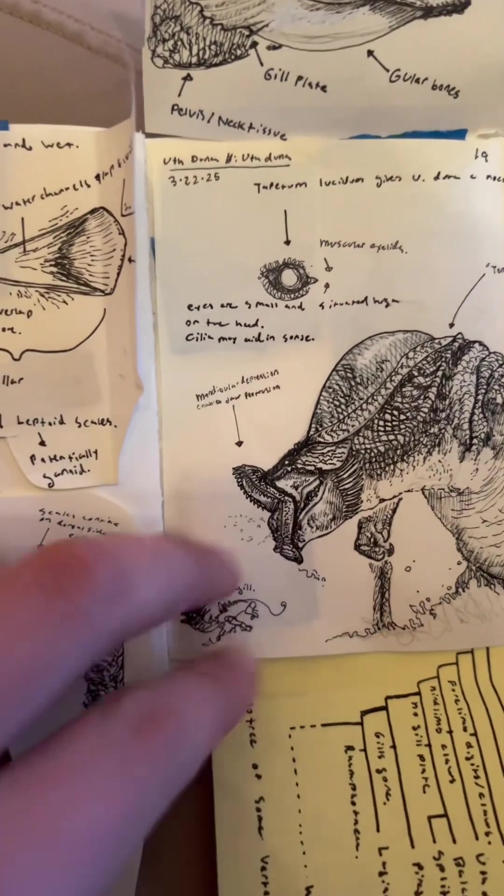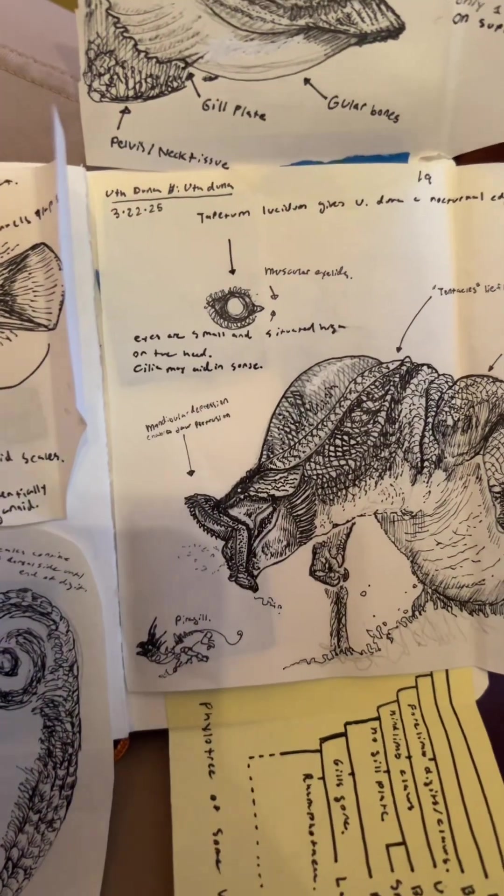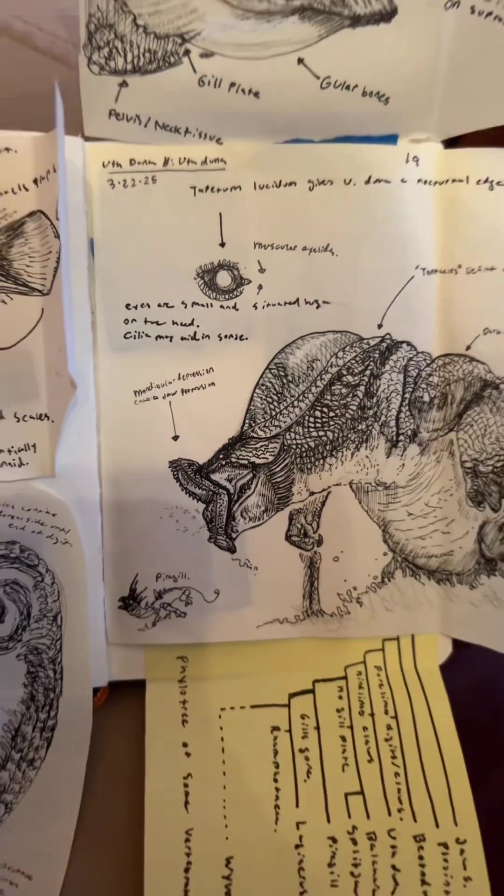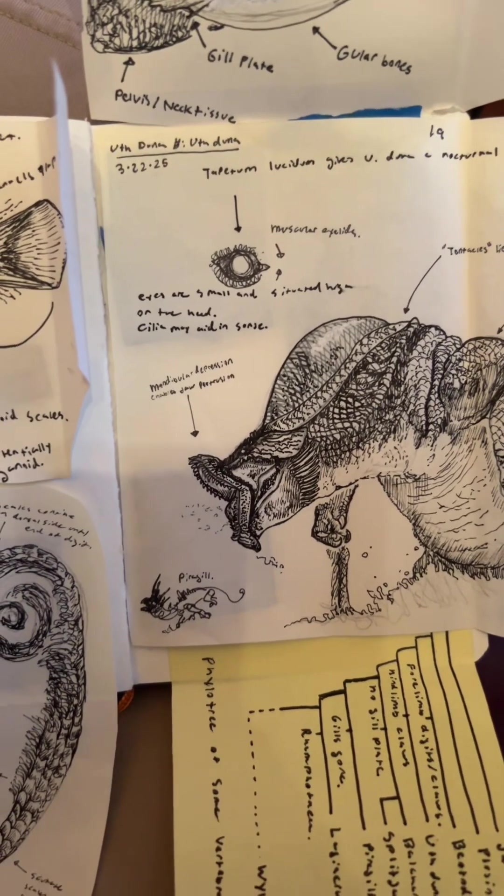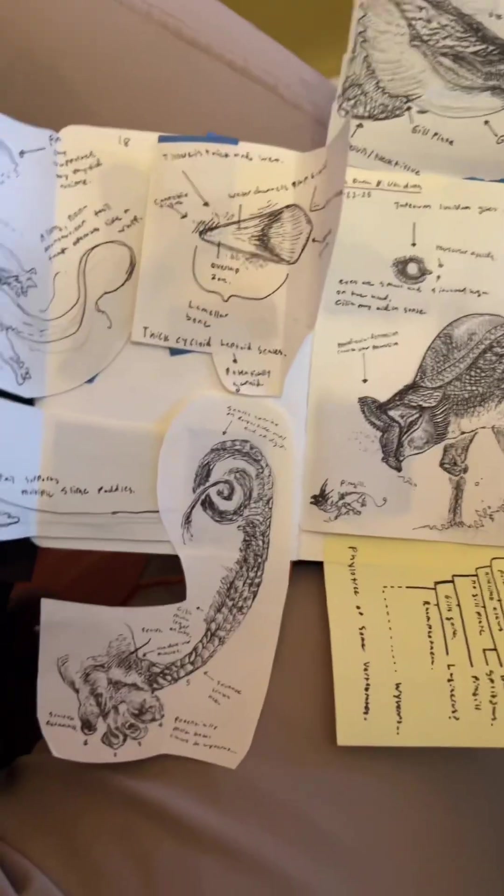Most lobe-finned fishes get extensions out of their jaws, if they do at all, by a joint at the back of the skull, like in coelacanths. And lung fishes don't really stick their jaws out very much, period. But we'll get to where Uth Duna sits on the big phylogenetic tree in a minute.